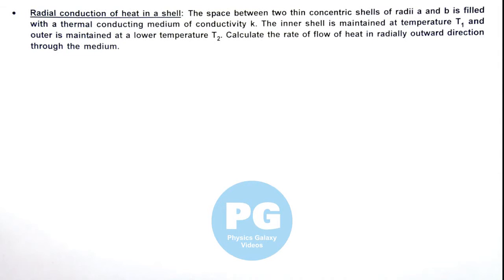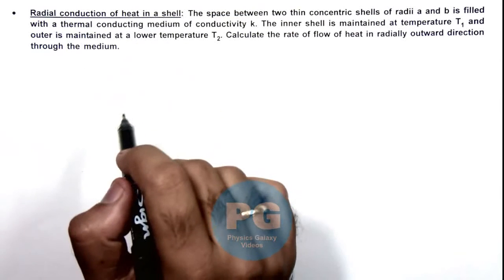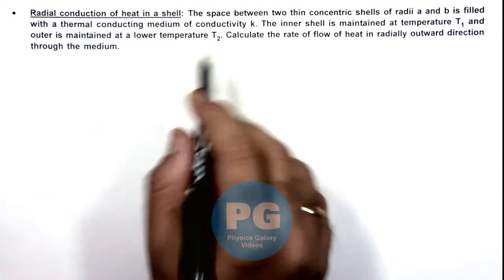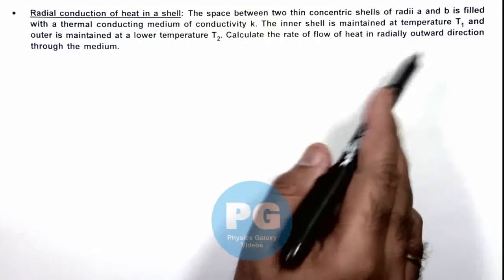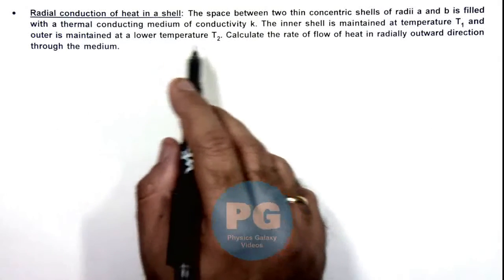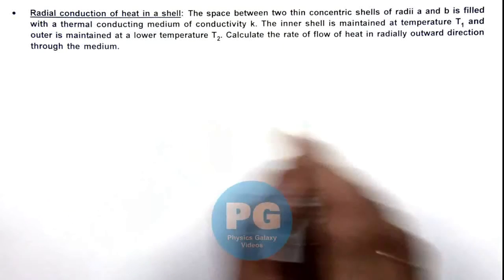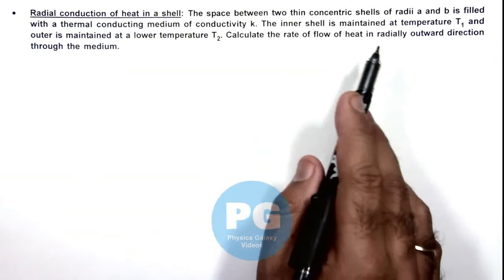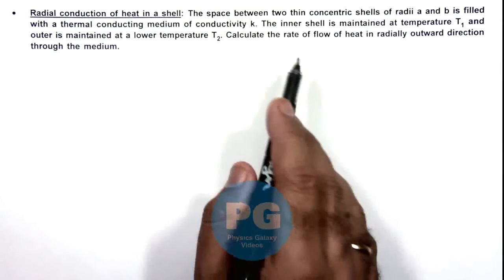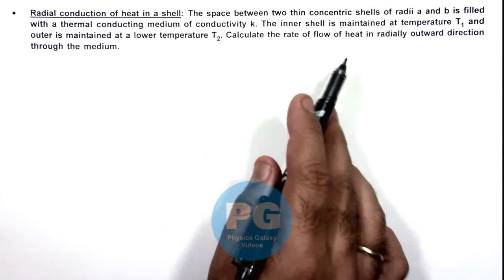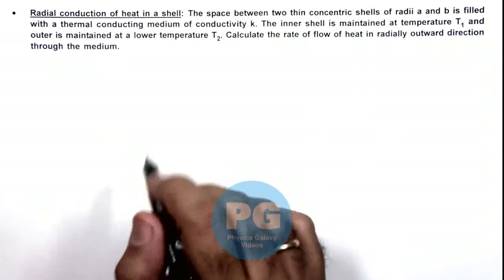In this illustration, we'll be studying the radial conduction of heat in a shell. We are given that the space between two thin concentric shells of radii a and b is filled with a thermal conducting medium of conductivity k. The inner shell is maintained at temperature T₁ and the outer is maintained at a lower temperature T₂. We are required to calculate the rate of flow of heat in the radially outward direction through the medium.